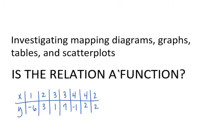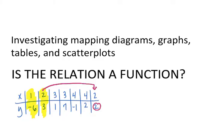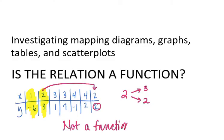Let's look at the first example — is the relation a function? Everything is a relation if you have inputs and outputs. We have 1 paired with -6. Scanning through, no other input is 1. Next, 2 is paired with 3, but 2 also appears again paired with 2 — so input 2 has two separate outputs: 3 and 2. Because each input must have one and only one output, this is not a function. We could stop there.